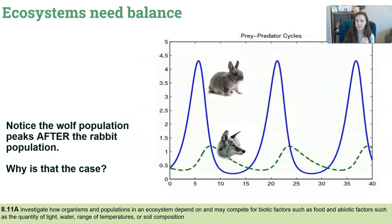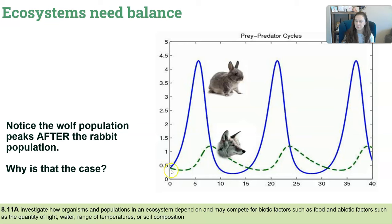Ecosystems need balance. Notice that the wolf population here will peak after the rabbit population. If the rabbits increase rapidly, they create a great food source for wolves, who then move in to feed on them. After the wolf population increases and feeds on the rabbits, the rabbit population begins to rapidly decline. Now there's not enough food to sustain the wolf population, so they start to decline after the rabbits. With fewer wolves, rabbits aren't being eaten as quickly, so they're able to increase their population again.